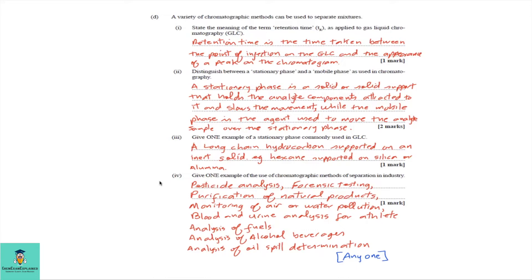D part 4: give one example of the use of chromatographic methods in industry. Possible answers include: pesticide analysis, forensic testing, purification of natural products, monitoring of air or water pollution, blood and urine analysis for athletes, analysis of fuels, analysis of alcoholic beverages, and analysis of oil spill determination — you can choose any one.